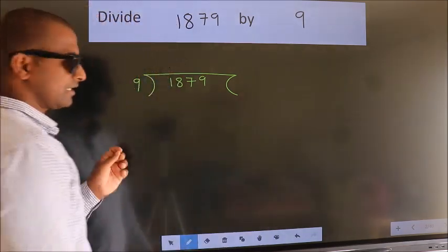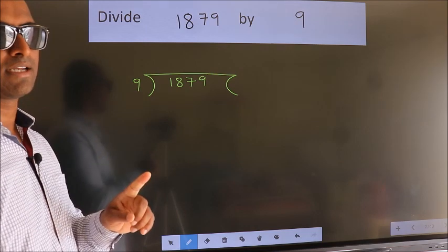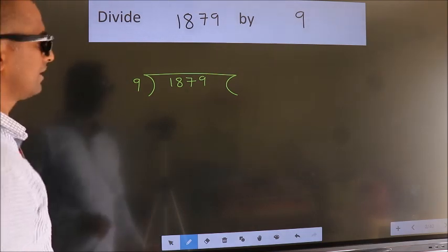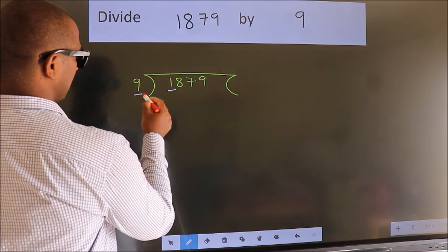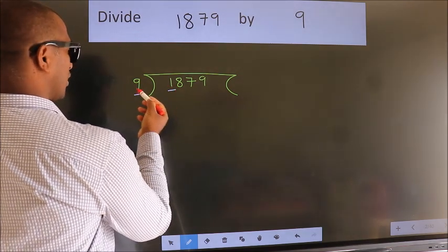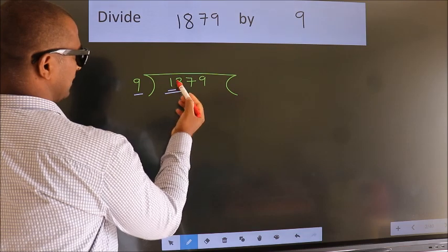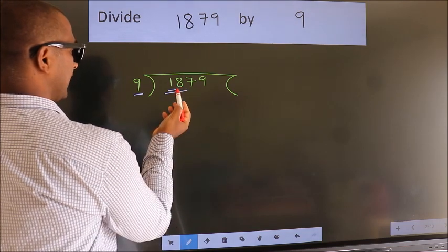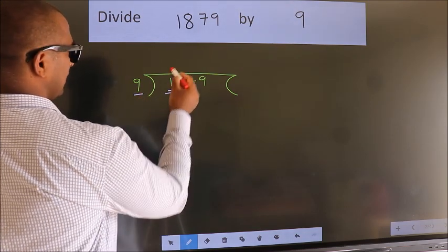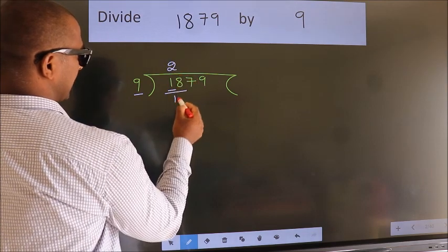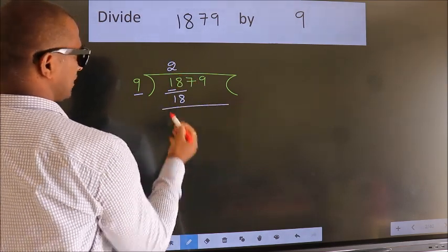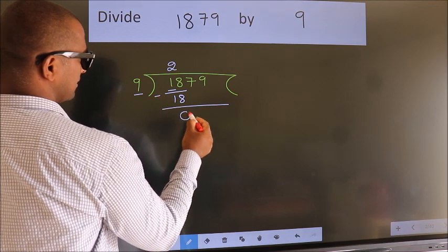This is your step 1. Next, here we have 1. 1 is smaller than 9, so we should take two numbers: 18. When do we get 18 in the 9 table? 9 times 2 is 18. Now we should subtract, we get 0.